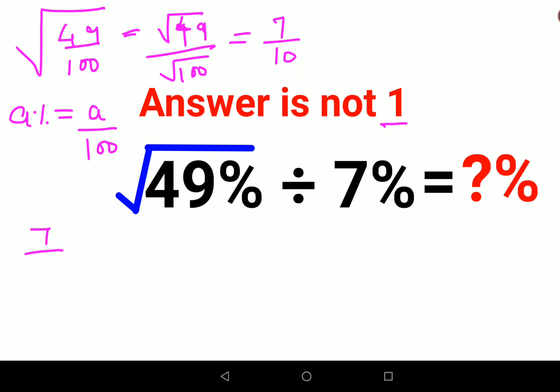This eventually gets you 7 upon 10 divided by 7%, which is nothing but 7 upon 100.